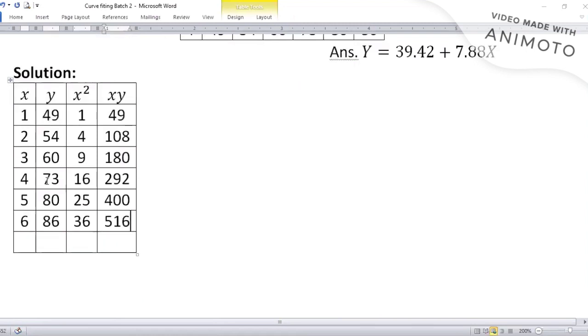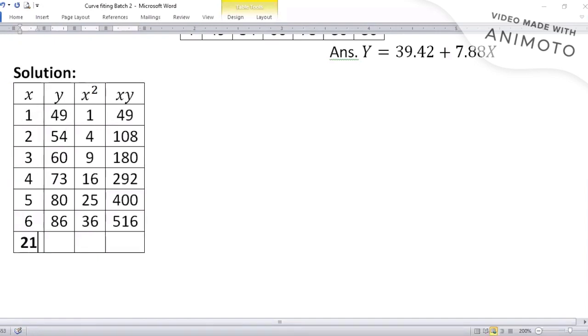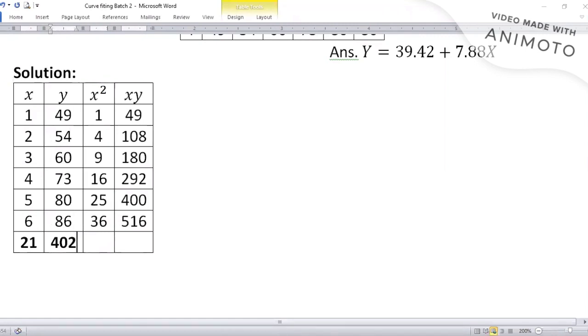Okay, so you please help me with the totals. What are going to be their totals? X total, y total, x square total, and x into y total. The totals are: x total is 21, y total is 402, x square total is 91, and xy total is 1545.